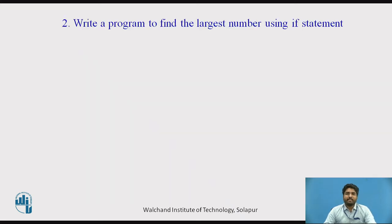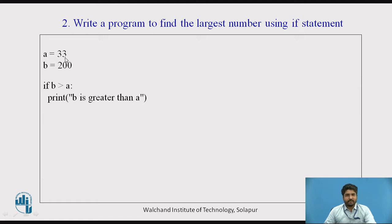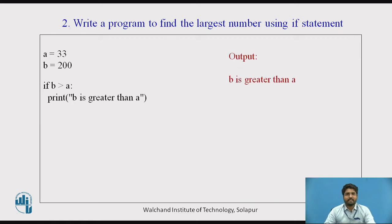Write a program to find the largest number using if statement. Here a is 33 and b is 200. If b is greater than a — here 200 is greater than 33 — that is true, so it goes inside the body of if and executes 'b is greater than a'. So the output would be 'b is greater than a'.